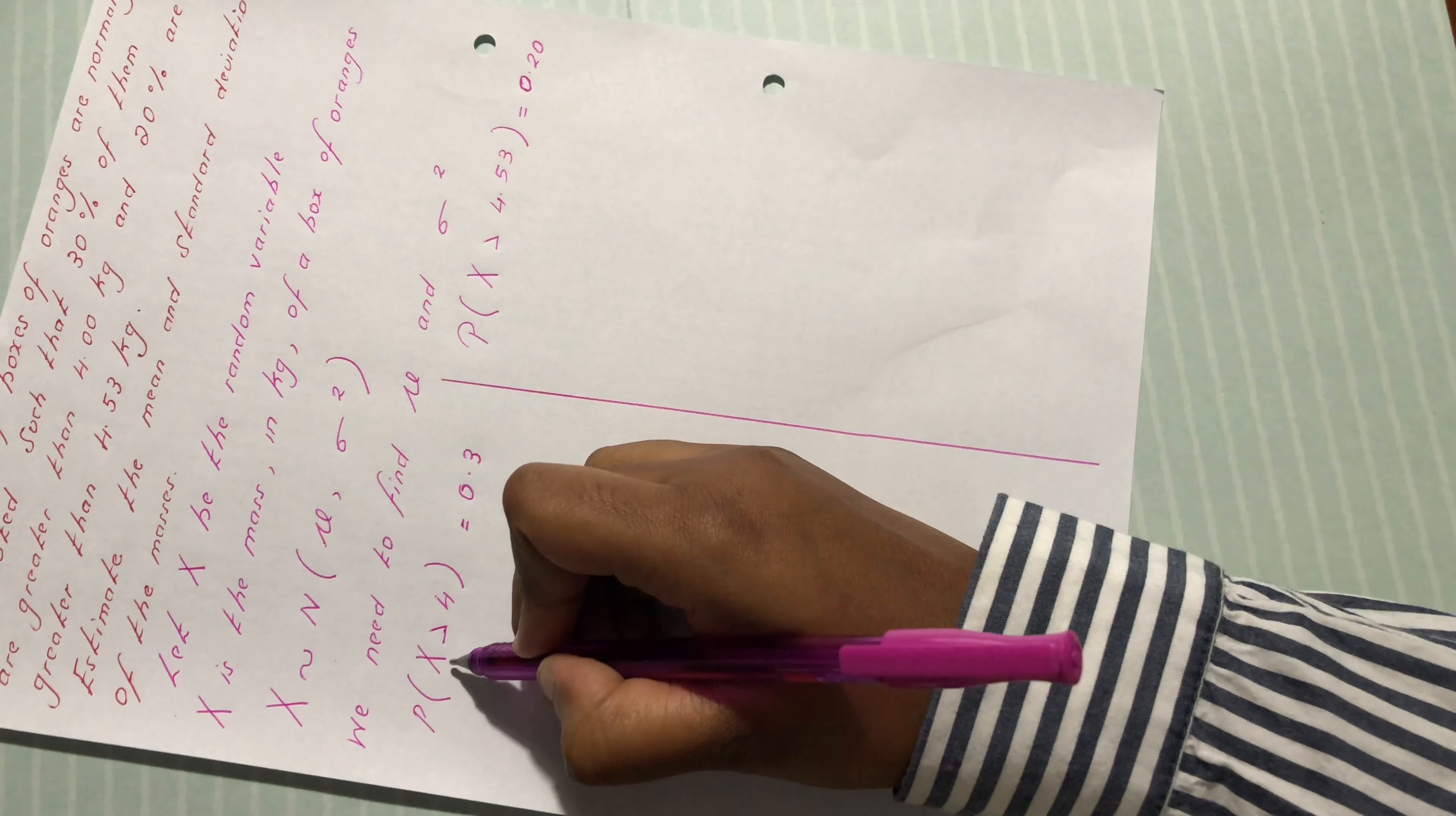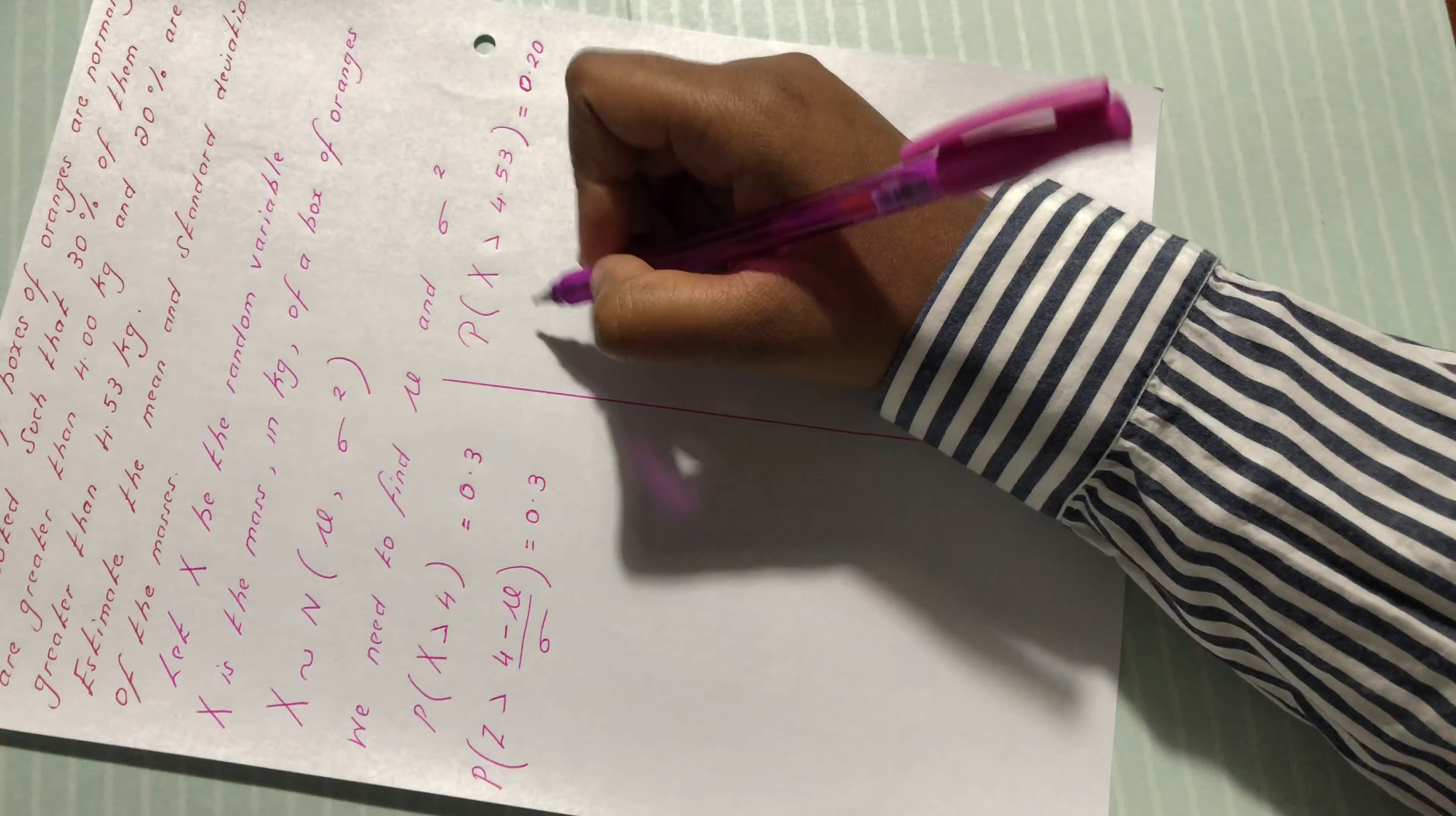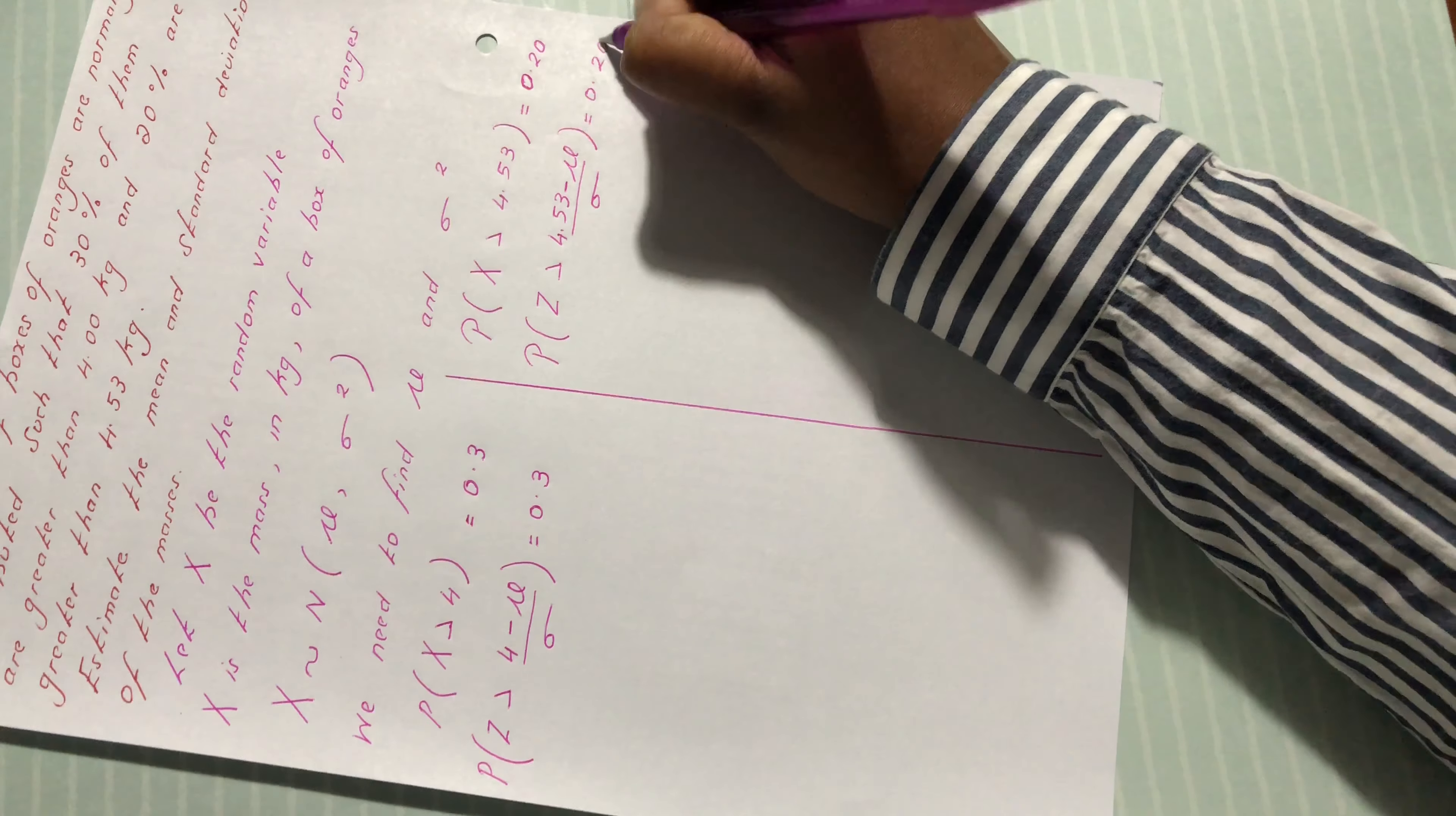Next, we are going to standardize. We have probability of z greater than 4 minus mu divided by sigma equals 0.3. We're going to do the same thing for this one. Probability of z greater than 4.53 minus mu divided by sigma equals 0.2.